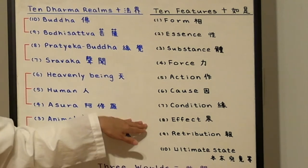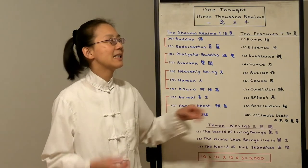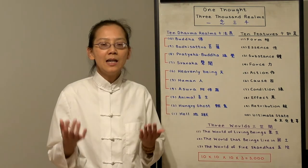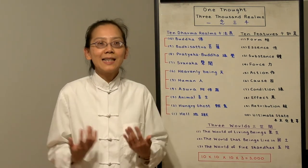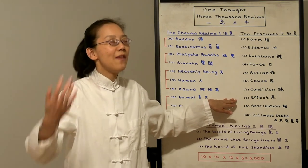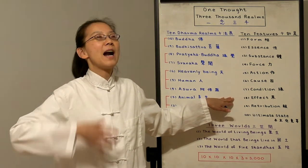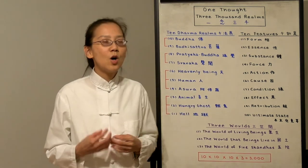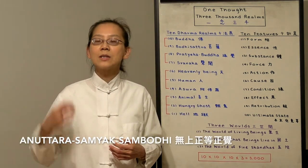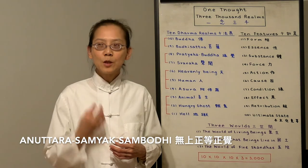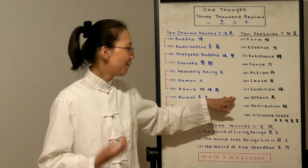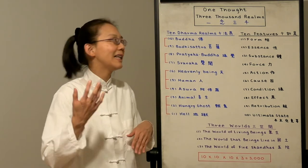Number 8 is Effect. Effect is the habitual effect. For the hell beings, they habitually have a lot of anger and resentment. So that's the carry over effect, habitual effect from prior lifetimes. For Buddha, their effect is called Anuttara Samyak Sambodhi. That means Supreme Perfect Enlightenment. That's Buddha's effect, which is becoming perfectly enlightened.